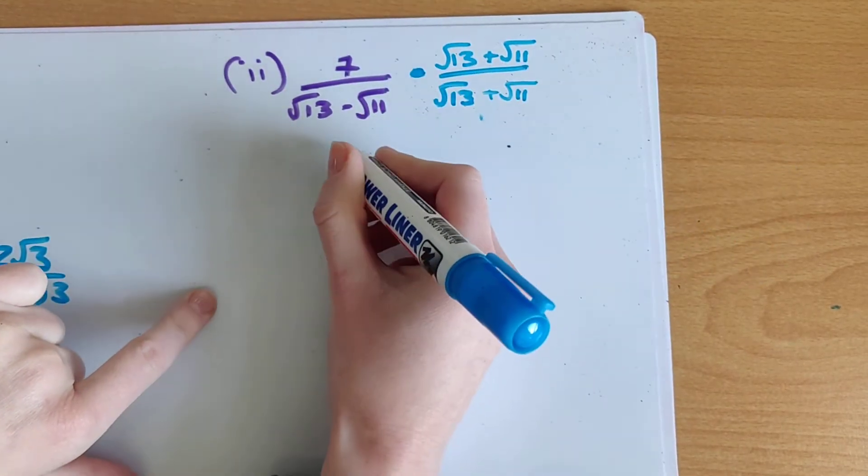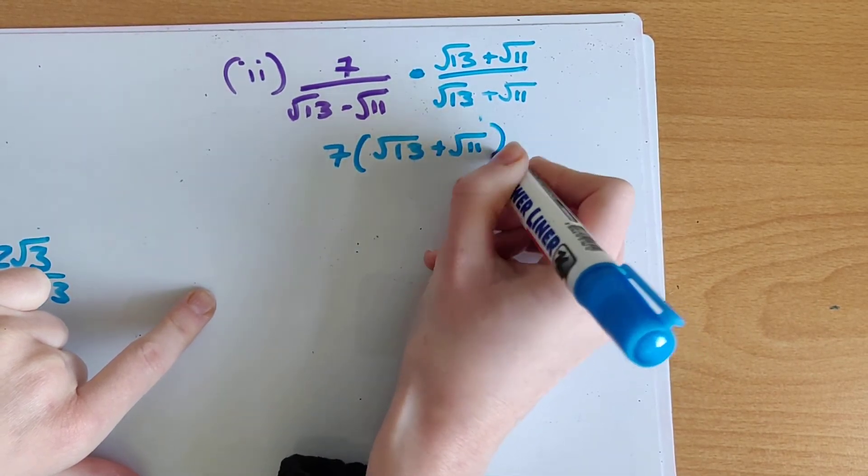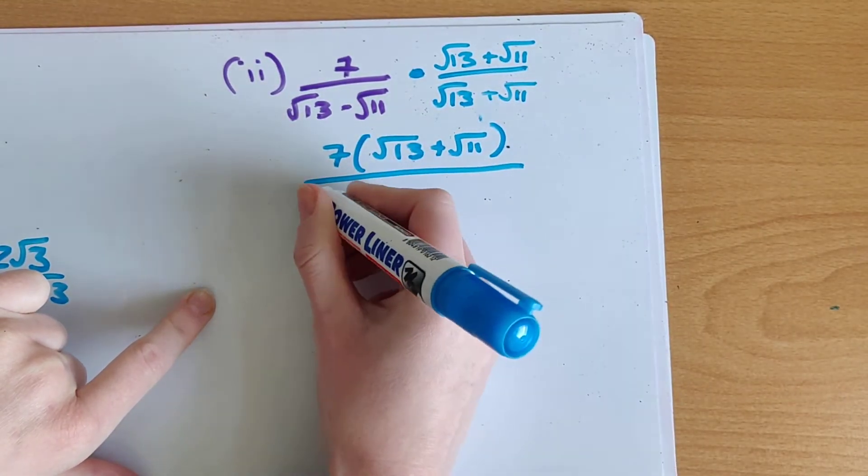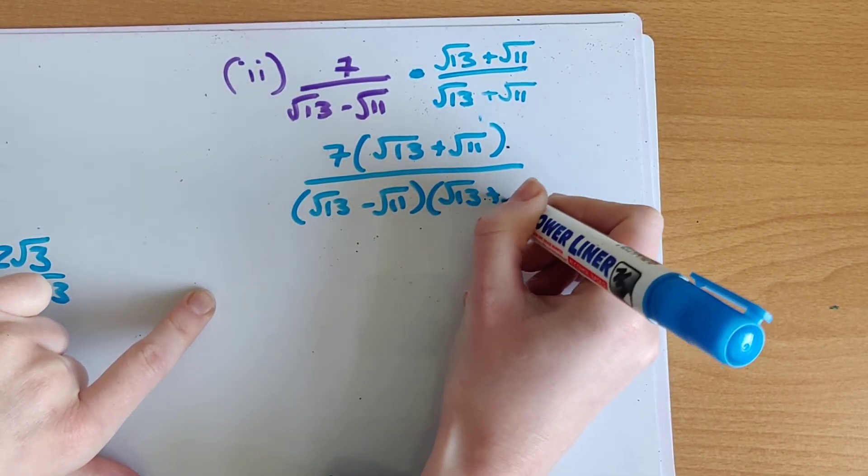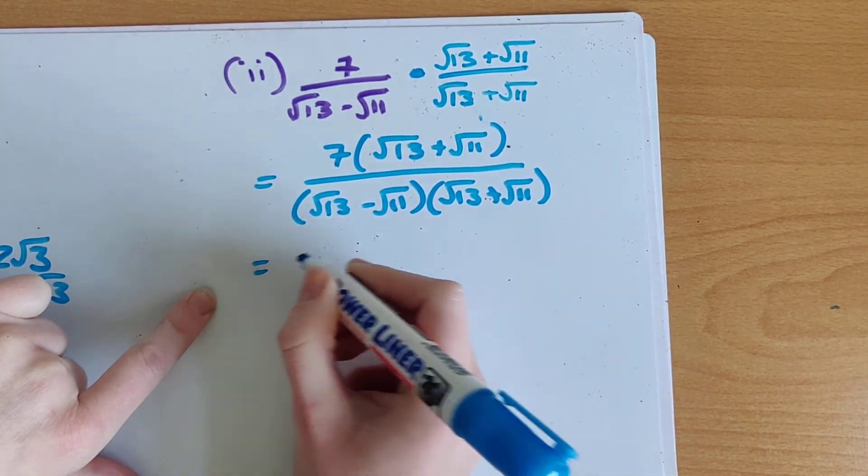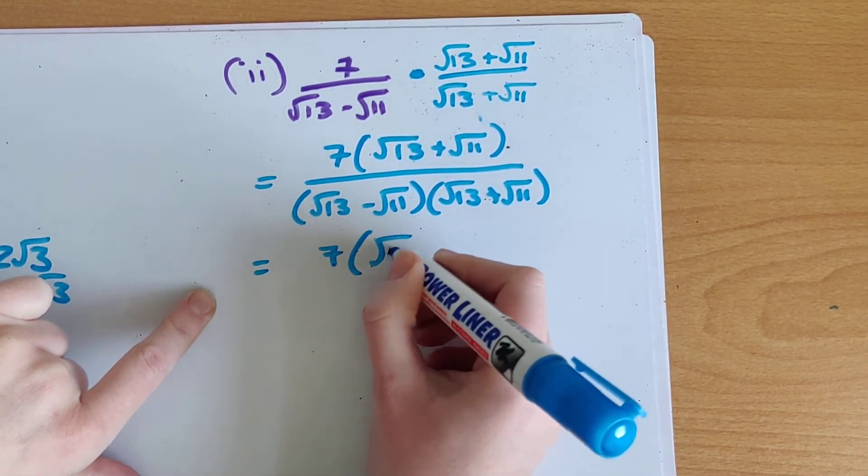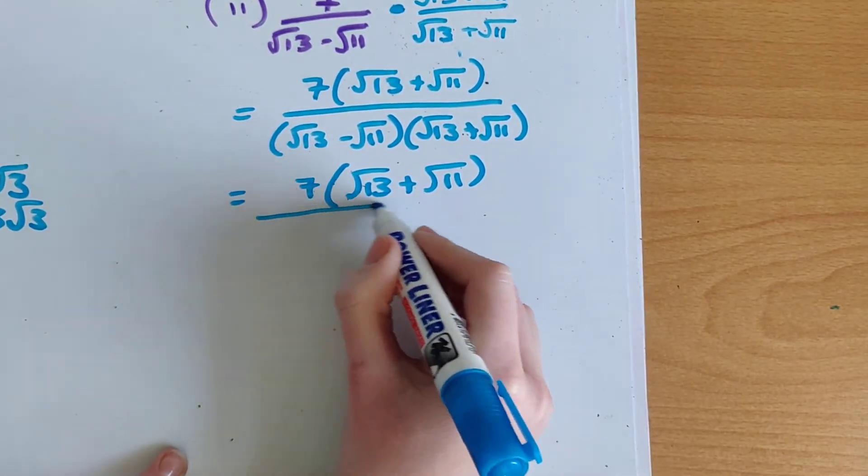On top we can just put them into brackets. So we have 7 by root 13 plus root 11 all over root 13 minus root 11 by root 13 plus root 11. So on top I'm going to leave them in brackets because it's just a constant on the outside and hopefully it might cancel eventually. But on bottom I'm going to split the brackets and multiply.